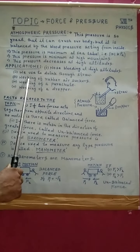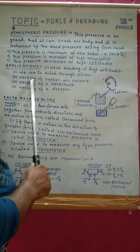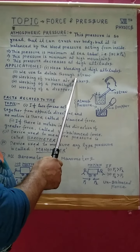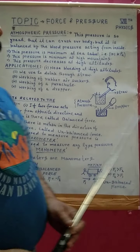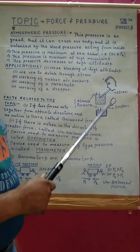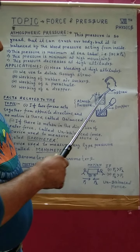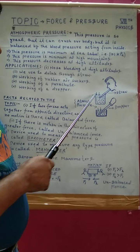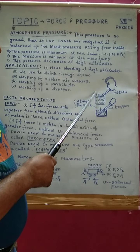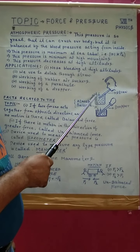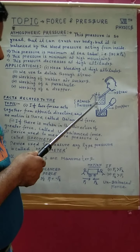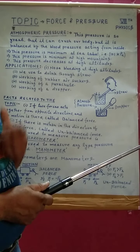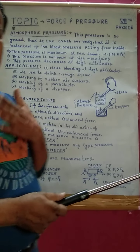Number two: we drink through a straw. As we drink something with the help of a straw, it is due to atmospheric pressure. The arrow in the figure indicates atmospheric pressure — due to this pressure, liquid rises in the straw and we are able to drink through it.